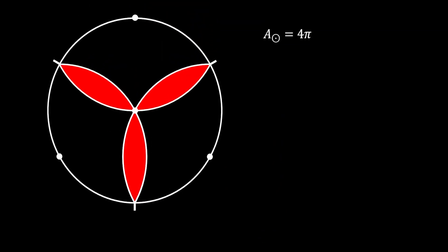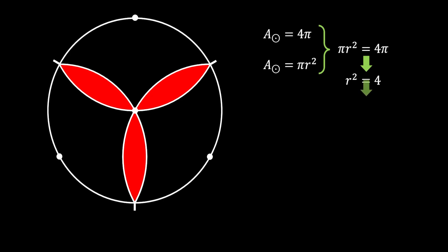Since we know the area of the circle, let's first find its radius. We know that the area is equal to πr², so we can say that πr² is equal to 4π, which means that r² is equal to 4, which means that the radius of our circle must be equal to 2.